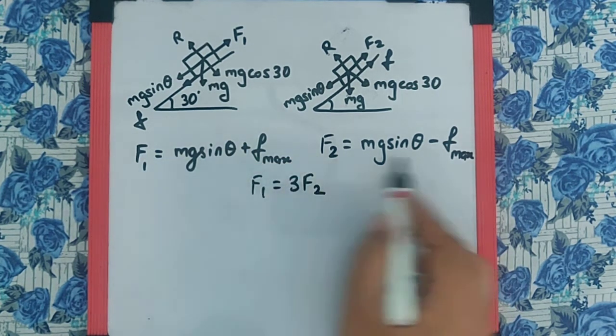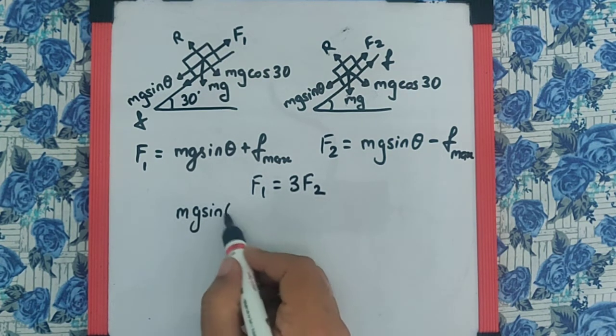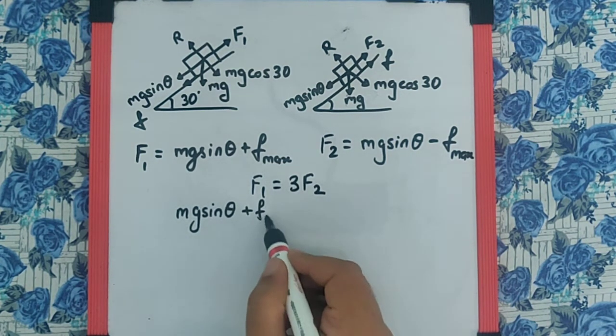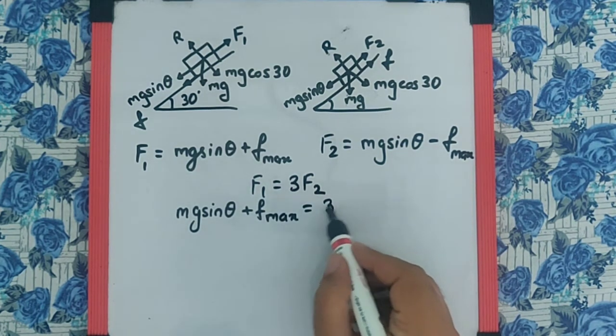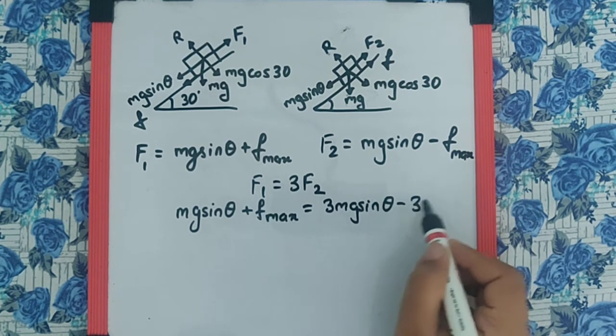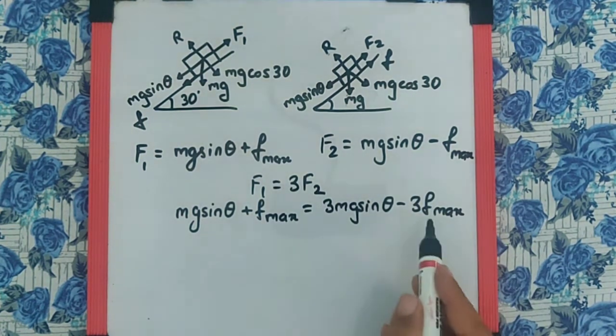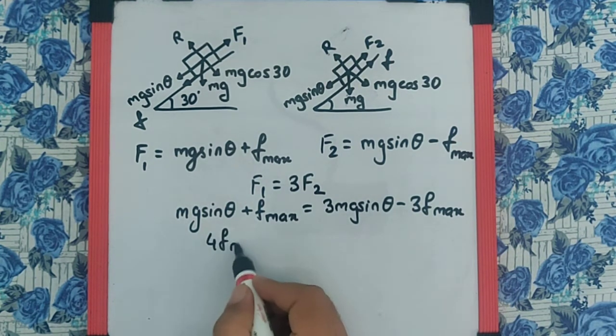So if we substitute the value of F₁ and F₂, we get mg sin θ + Fₘₐₓ = 3 times mg sin θ minus 3 times Fₘₐₓ. So if we rearrange, take this Fₘₐₓ over here, it becomes 4Fₘₐₓ is equal to 2 mg sin θ.